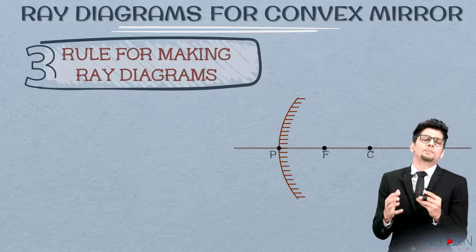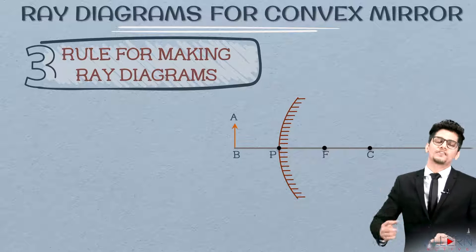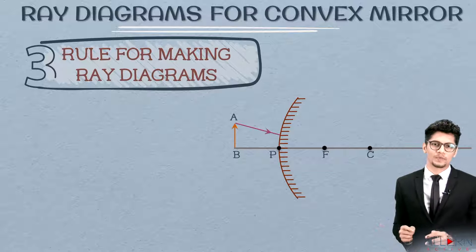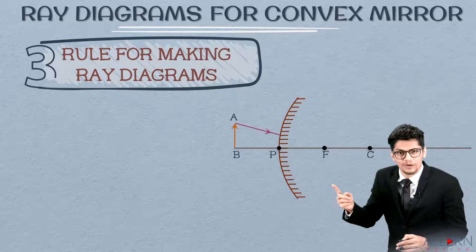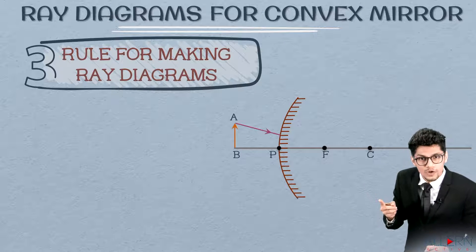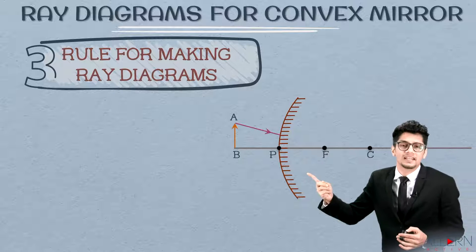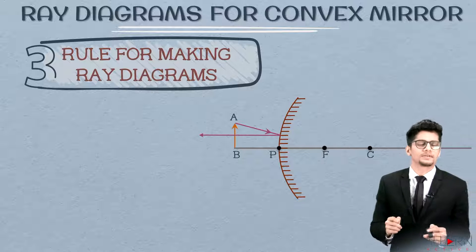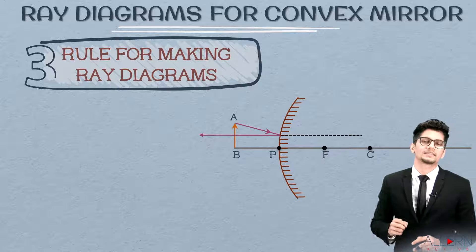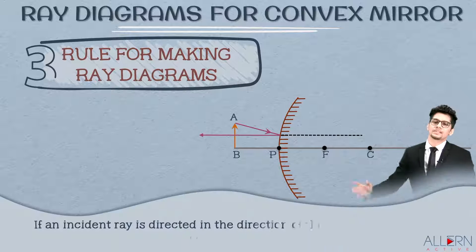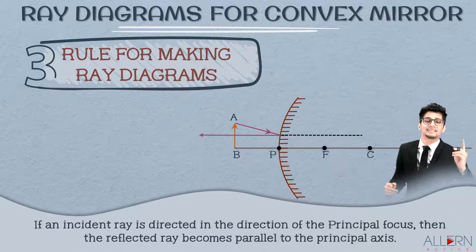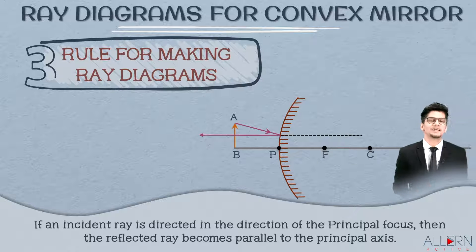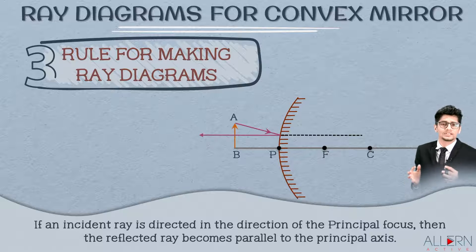The third rule: we try to pass the ray of light through the focus, but again the mirror comes in between. So we direct the ray of light in the direction of the focus. After reflection, this ray will simply go parallel to the principal axis, and we extend this ray at the back. If an incident ray is directed toward the principal focus, the reflected ray becomes parallel to the principal axis.